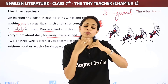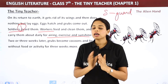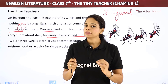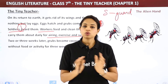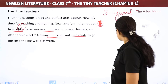After three more weeks of lying still in the cocoon without food or activity, the cocoons break and perfect ants appear. So the total process from grub to perfect ant takes about two to three weeks as a grub, and then another three weeks inside the cocoon, after which fully formed ants emerge.